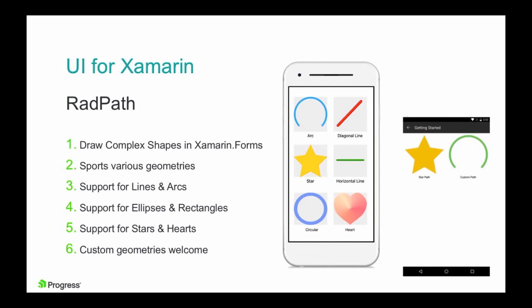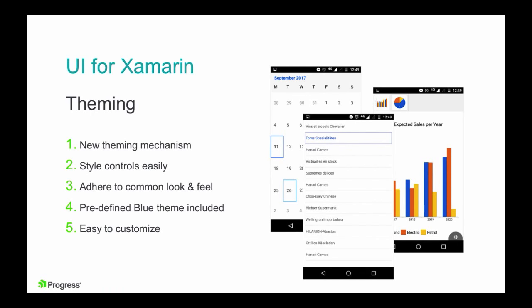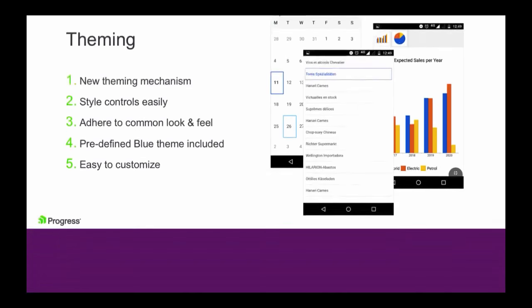There is also a brand new Rad Path control, which allows you to draw complex shapes in your Xamarin.Forms app. It supports lots of geometries like lines, rectangles, ellipses, stars, and hearts, and you can also do custom geometries. If you have any drawing needs in your app, this control is for you. Theming has been something we've been asked about a lot — it's a common requirement for line-of-business apps to have a consistent look and feel across all controls. We're presenting a nice theming option that helps you easily style each control individually or all your controls together. We ship a blue theme by default, but you can start from our theme and make it your own.